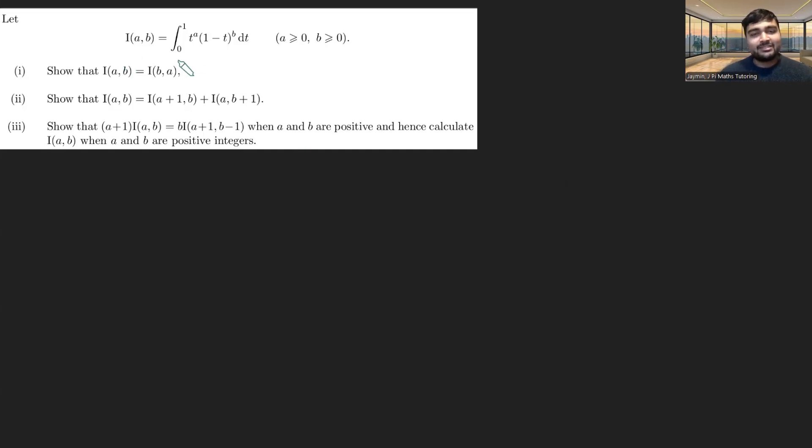We've got I(a,b) being defined to be the integral from 0 to 1 of t to the a times 1 minus t to the power of b dt, where a and b are at least 0. Part 1, we want to show that I(a,b) equals I(b,a). Part 2, we want to show that I(a,b) equals I(a+1,b) plus I(a,b+1). And then part 3, we want to show that (a+1)I(a,b) equals b*I(a+1,b-1), where a and b are positive.